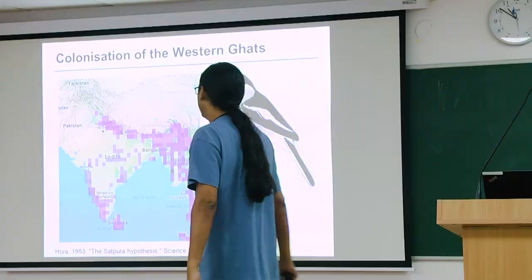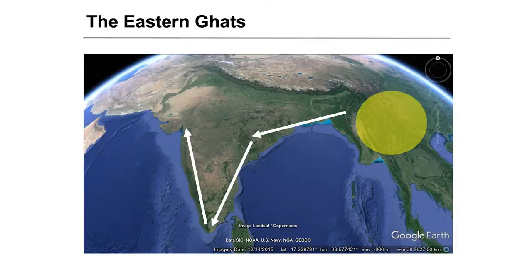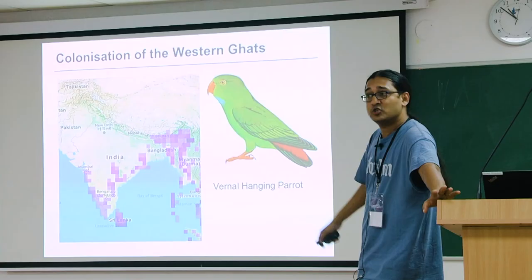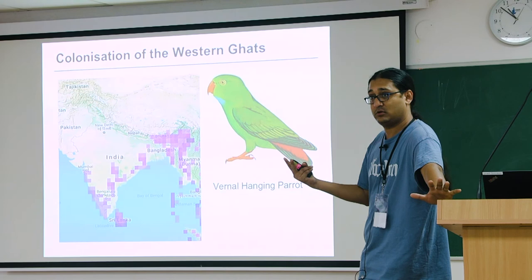The alternative hypothesis is that species moved from Northeast India down the Eastern Ghats and then colonised the Western Ghats from the south northwards. The vernal hanging parrot (lorikeet) is found in Northeast India, the Eastern Ghats, and the Western Ghats, supporting this route. So potentially the Western Ghats could have been colonised via two routes: one across the Satpura mountain range moving south, or down the Eastern Ghats and then north into the Western Ghats.